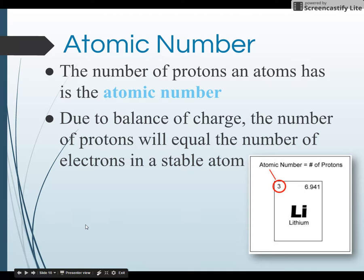Due to the balance of charge, the number of protons will always equal the number of electrons in a stable atom. So for lithium, it has three protons, which will mean it will have three electrons to balance out the charge.